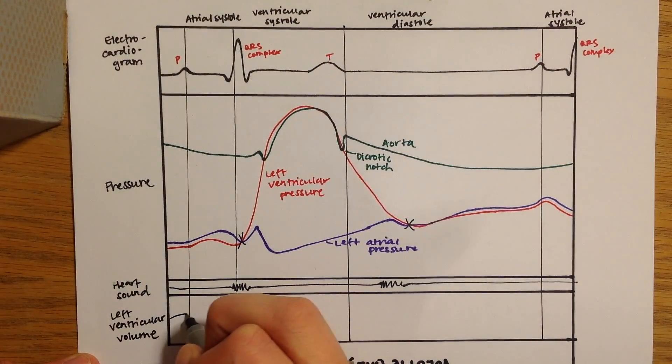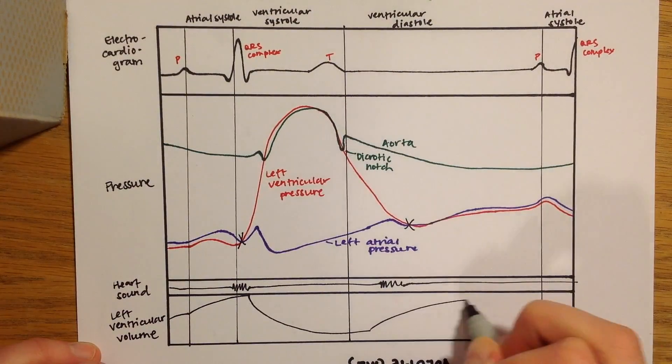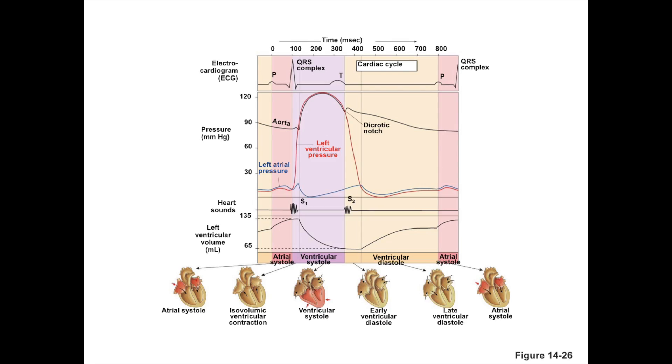The very bottom part of the Wiggers diagram shows the volume changes in the left ventricles. I won't take much time to go over that, but you can study all the sections of the Wiggers diagram more on this picture.